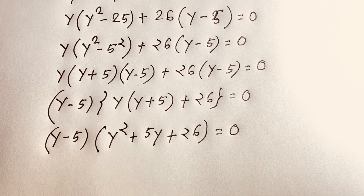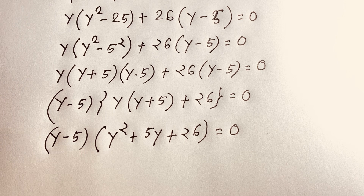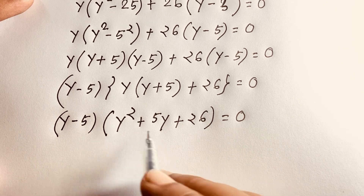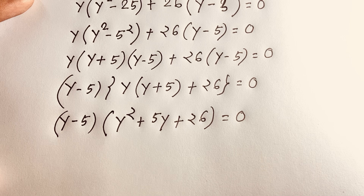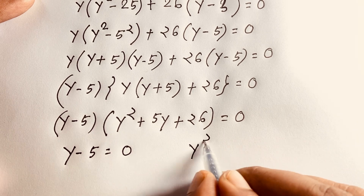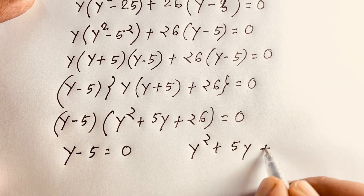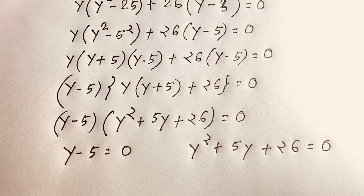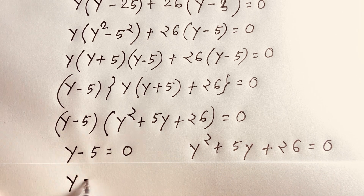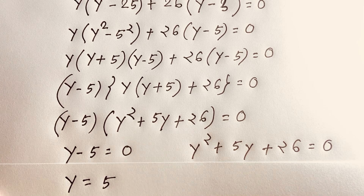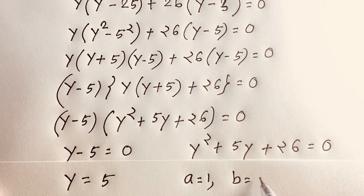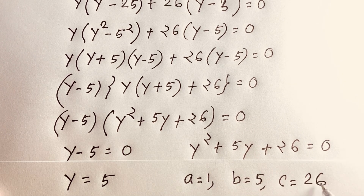So we find out here are two cases. First case: y minus 5 equals 0, so y equals 5. Second case: y² + 5y + 26 equals 0, where a equals 1, b equals 5, and c equals 26.